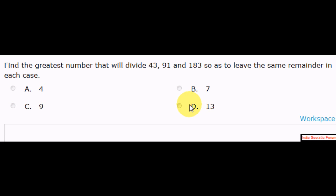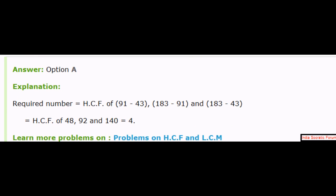Pause the video and do the job. Okay. The answer is option A. How we got that number? It's quite easy. We have to find the highest common factor of these two numbers subtracted, subsequent numbers subtracted. There is a reason. We'll look into the reason later. So if you subtract 91 minus 43, 183 minus 91, 183 minus 43.